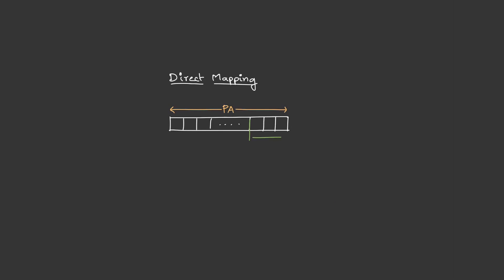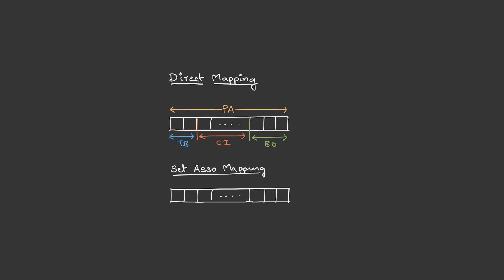To understand the segregation of physical address bits in set associative mapping, let's compare with direct mapping. In direct mapping, the first few bits are block offset, the next few bits are cache index, and the rest are tag bits. In set associative mapping, the block offset remains the same. After the block offset, the next few bits are set index, which is less than the cache index, because cache index refers to the number of lines and set index refers to the number of sets. Since the number of sets is less than the number of lines, cache index bits are greater than the set index bits.